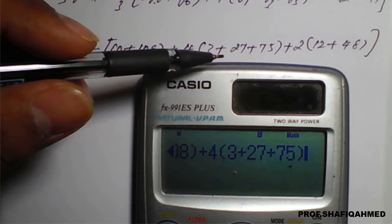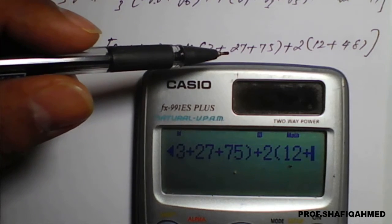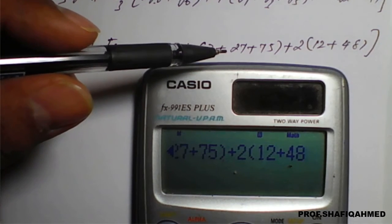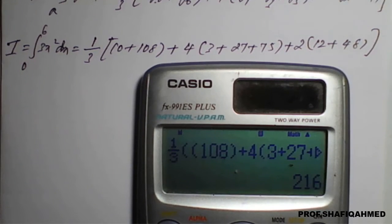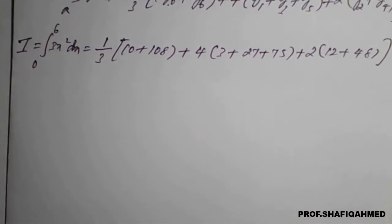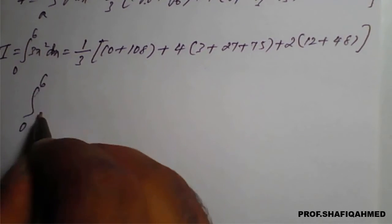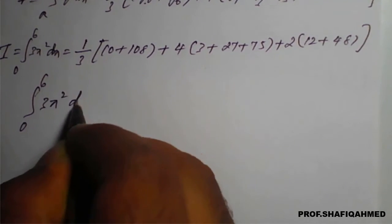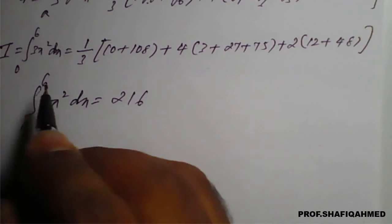Y2, 2 times plus 2 times bracket 12 plus 48. Close the bracket and one more close the bracket and see what answer you will find. You can find here y means result, which is 216. So therefore, I can say that integration 0 to 6, 3x squared dx will be 216.